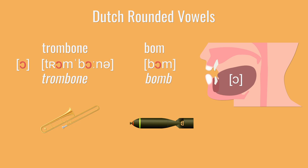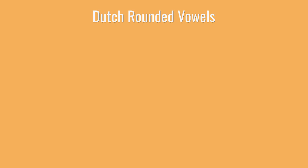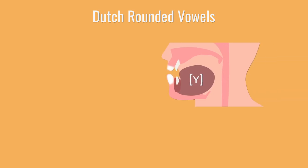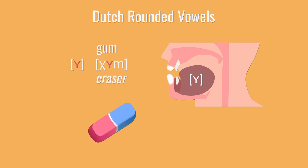Just to compare them directly: English has bam and Dutch has bom — bam, bom. Next there's E as in gum. This one is based on the tongue position of I. Your tongue should be near the front, fairly high up in your mouth. I — and then round your lips.